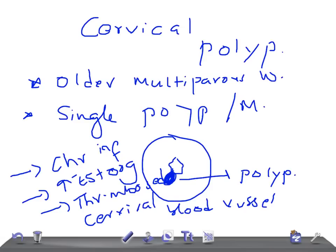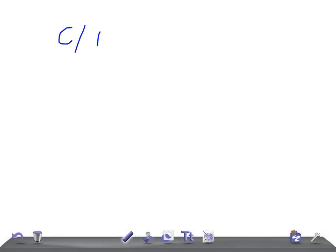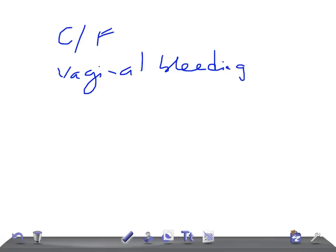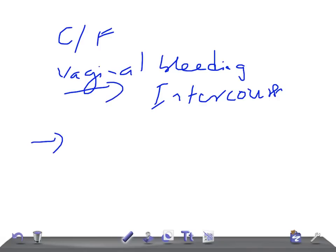How does the patient present? The clinical features include vaginal bleeding — often after intercourse, which is really very important to remember. Bleeding can also occur between normal menstrual periods. On speculum examination, you see smooth red or purple finger-like projections from the cervical canal. If you take a biopsy, it reveals atypical cells and signs of infection.